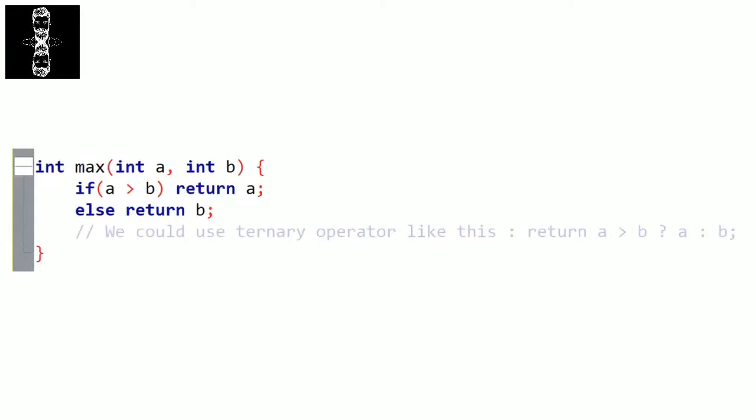Next function: let's make a function that returns the maximum between two integers a and b. The function is of type integer. Let's name the function max. In parameters, we need the two integers a and b — we don't want to modify the values, so pass by value. Inside we use a condition: if a is bigger than b, we return a; else we return b. I wanted to show that we can use multiple return statements in a function, but only one will be executed. Note that we could also use the ternary operator.